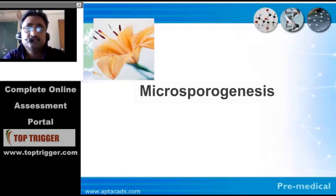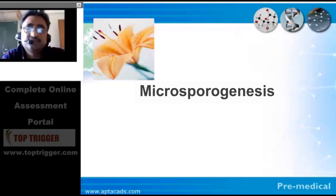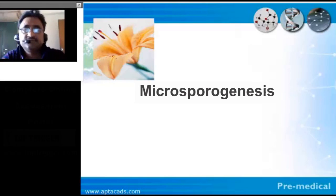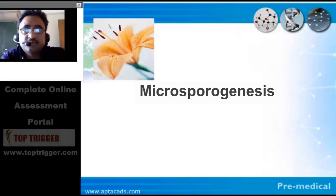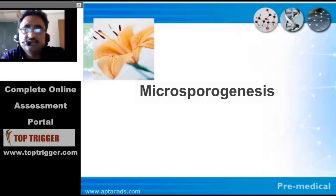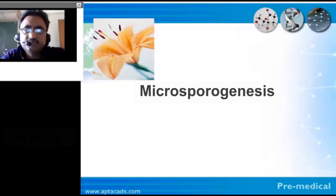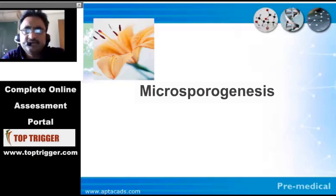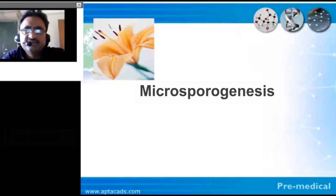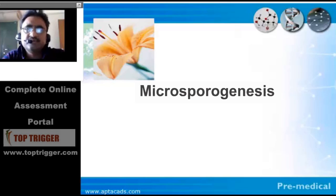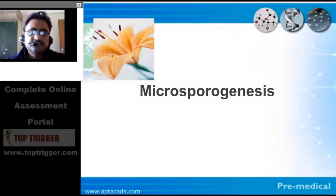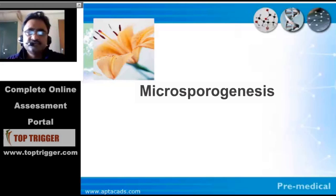Today we will discuss one of the most important chapters of plant reproduction. In plant reproduction, the key topics are microsporogenesis, megasporogenesis, pollination, fertilization, development of seeds, and embryo. Out of those, the very first thing I am going to discuss today is microsporogenesis.